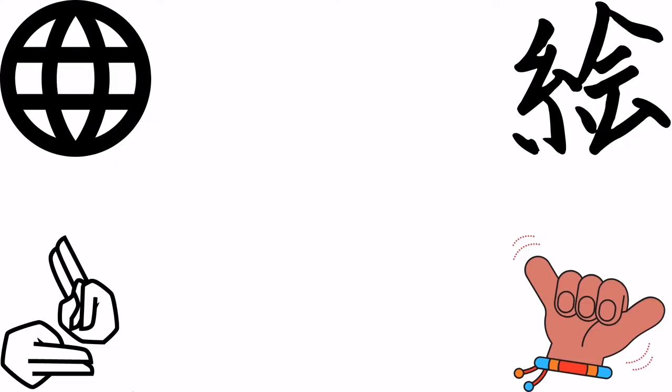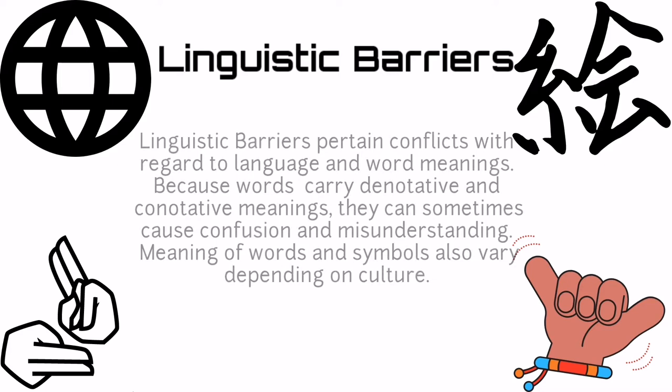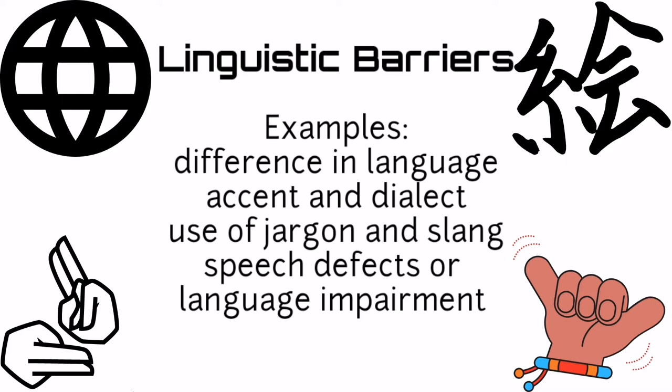Finally, let's go to the final barrier, which is the linguistic barriers. Linguistic barriers pertain to conflicts with regard to language and word meanings. Because words carry denotative and connotative meanings, they can sometimes cause confusion and misunderstanding. The meaning of words and symbols also varies depending on culture. Examples of linguistic barriers: difference in language, accent and dialect, use of jargon and slang, and speech defects or language impairment.